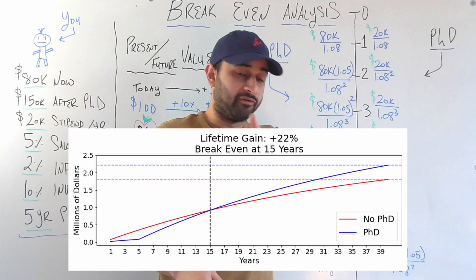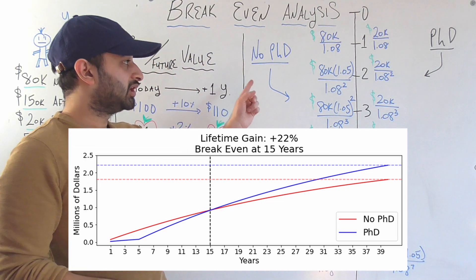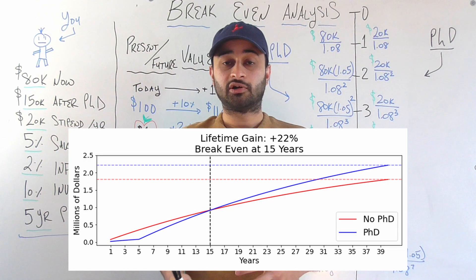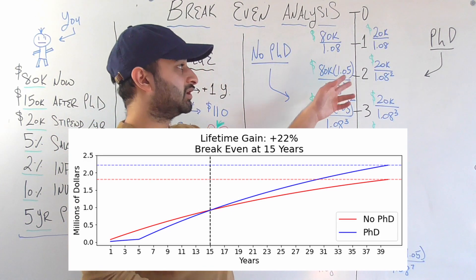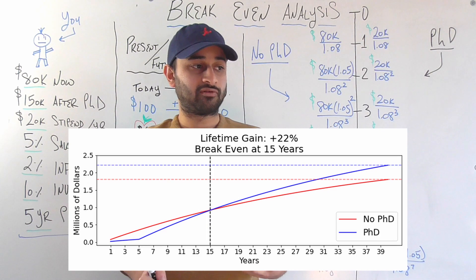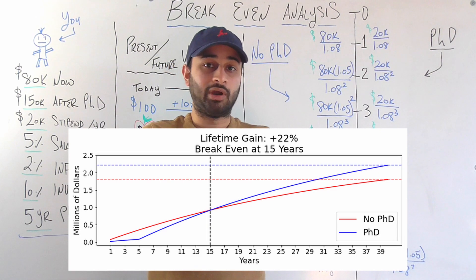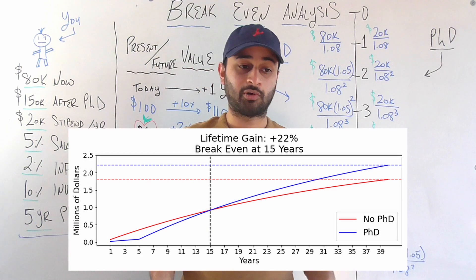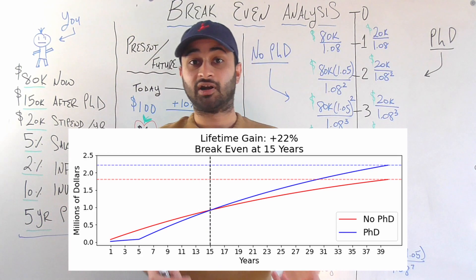Again, what that means is that before 15 years, not getting a PhD would be the more financially viable option in terms of today's dollars. But after 15 years, getting a PhD is going to be the more financially viable option. So the main question you need to answer for yourself is, do I want to wait 15 years to see your return? And that's a question that every person will have a different answer for.